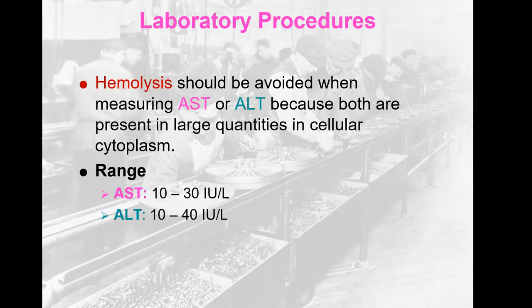Hemolysis should be avoided when measuring AST or ALT because they are present in large quantities in cellular cytoplasm, including that of red blood cells, especially AST. ALT will also be affected if the specimen is hemolyzed. It is a good rule in chemistry to avoid hemolyzed samples, but especially here. The normal range for AST is 10 to 30 international units per liter, and for ALT it is 10 to 40 international units per liter. That is the end of this quick review video.